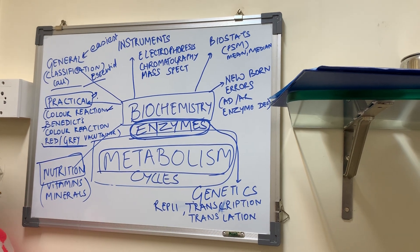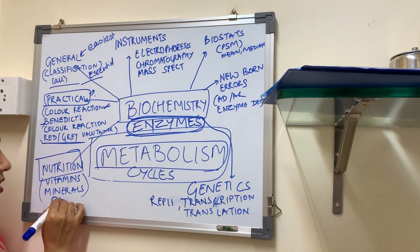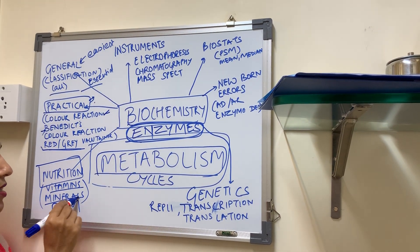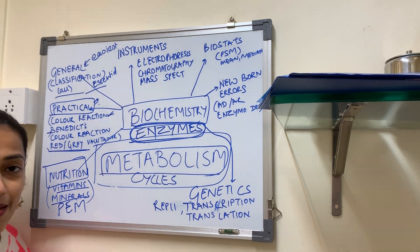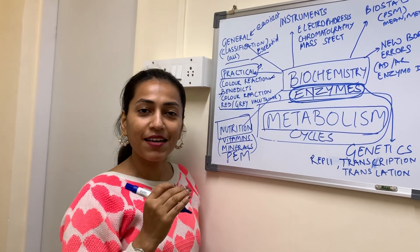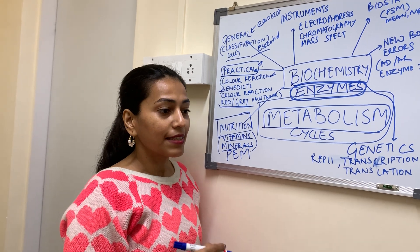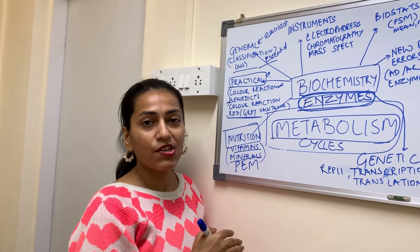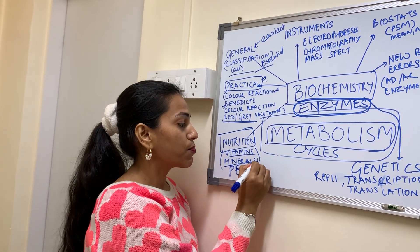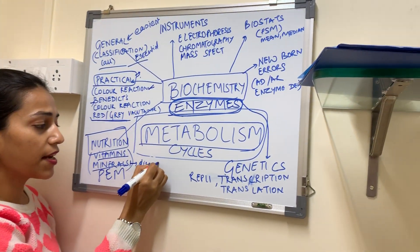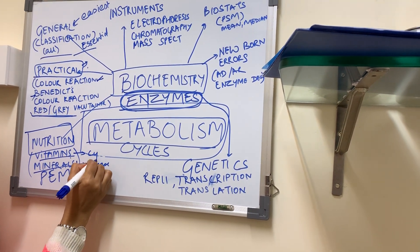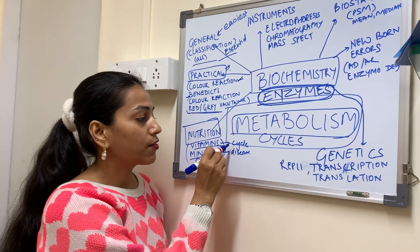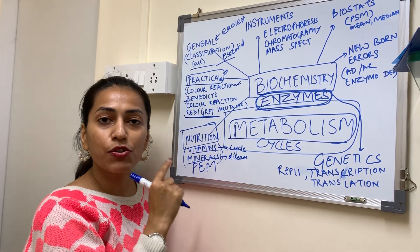The next point is nutrition. In nutrition, we all cover protein energy malnutrition nicely. What we do not cover well is vitamins and minerals. It is very difficult to remember all vitamins and minerals. Just read the important points — for which mineral deficiency what disease occurs, and which vitamin is used in which cycle. That is more important, especially for vitamin B, which is used in specific reactions.